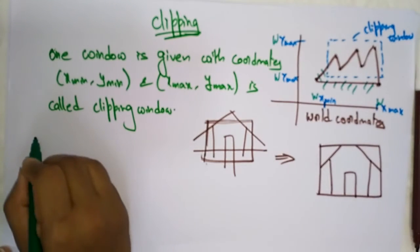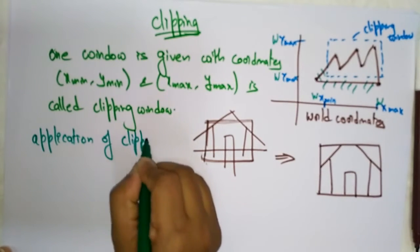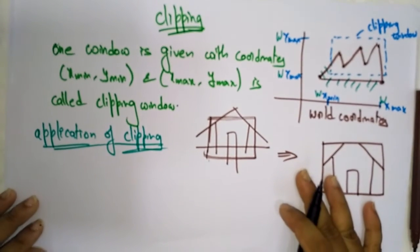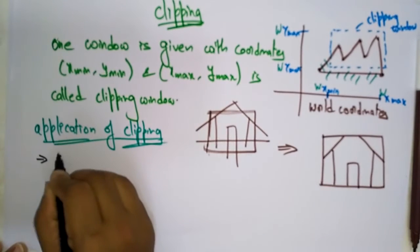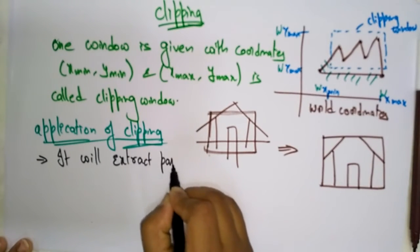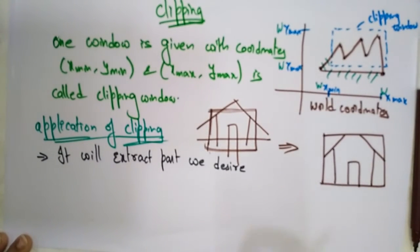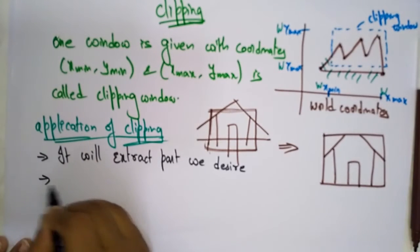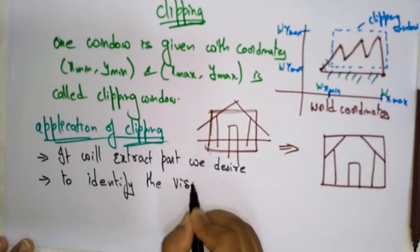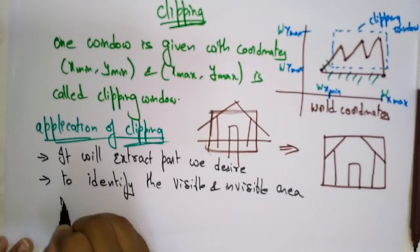Now let me write the applications of clipping. What are the different applications of clipping? First, clipping will extract whatever part we desire — only the part that we want will be displayed. Second, clipping is used for identifying the visible and invisible areas in a 3D object.